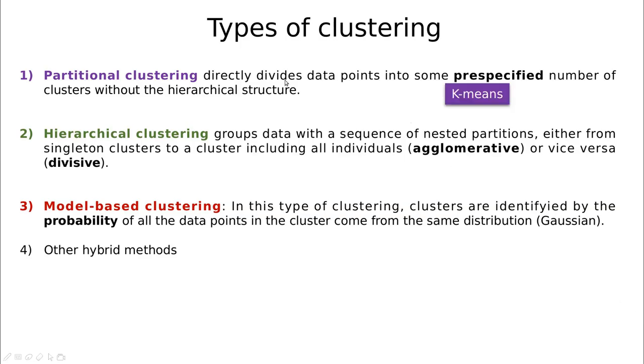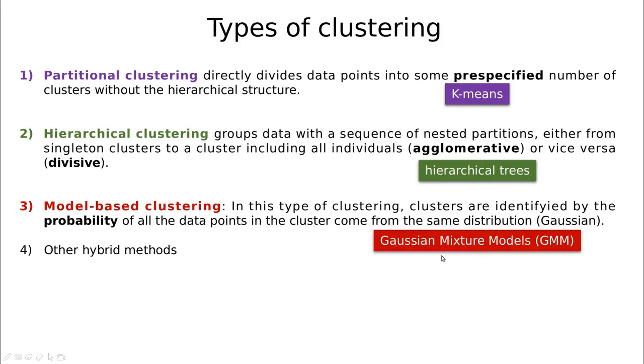There are of course hybrid methods that try to combine those previous ones. The most popular one in the partitional clustering camp is called k-means. So if you know how to do k-means, you know more than 90 percent of data scientists out there. Hierarchical trees is the most traditional one for hierarchical clustering, and Gaussian mixture models or GMM is the most popular in this model-based clustering field, but this is more advanced than the other two.